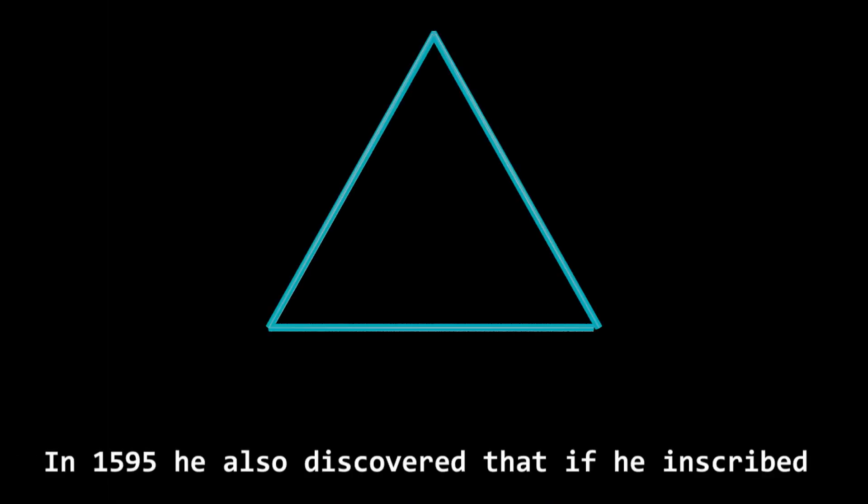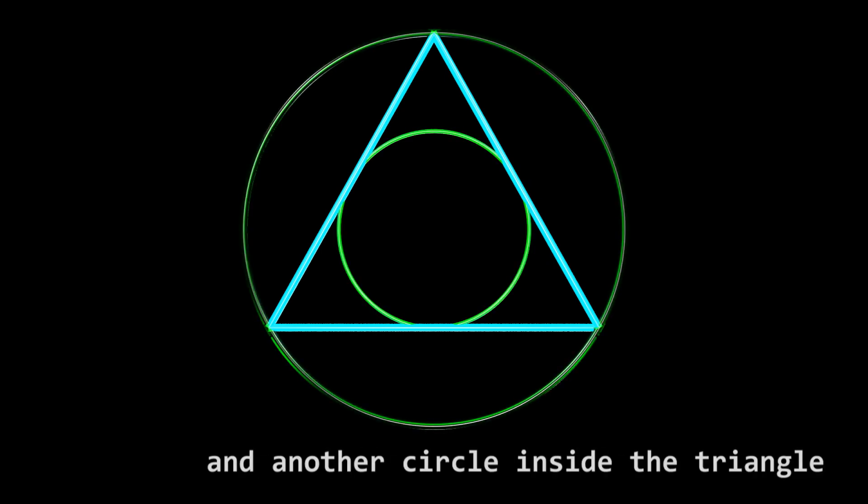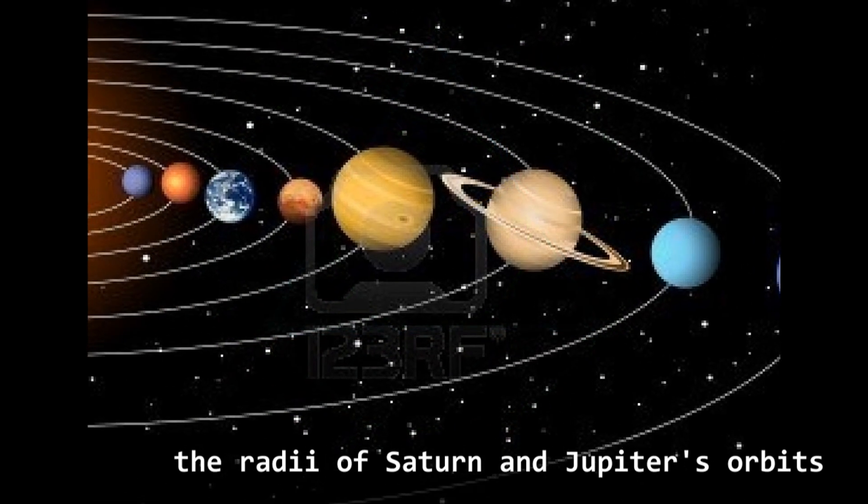In 1595 he also discovered that if he inscribed an equilateral triangle in a circle and another circle inside the triangle, the ratio between both circles' radii was very similar to the ratio between the radii of Saturn and Jupiter's orbits.